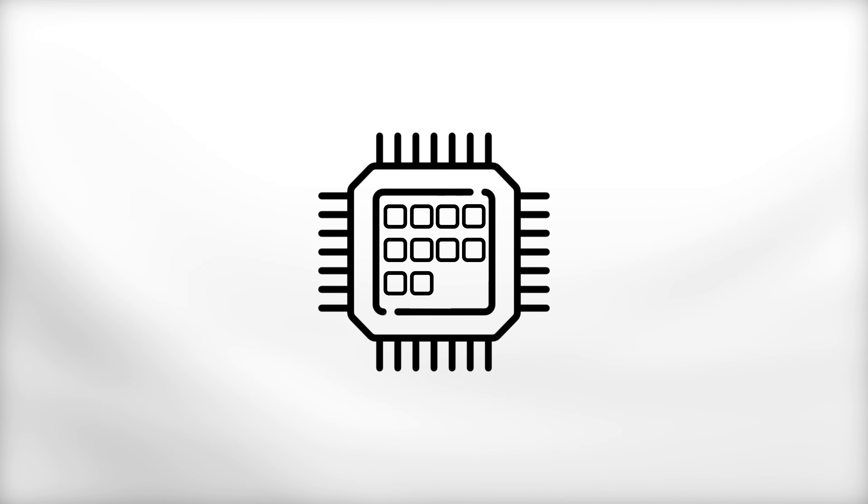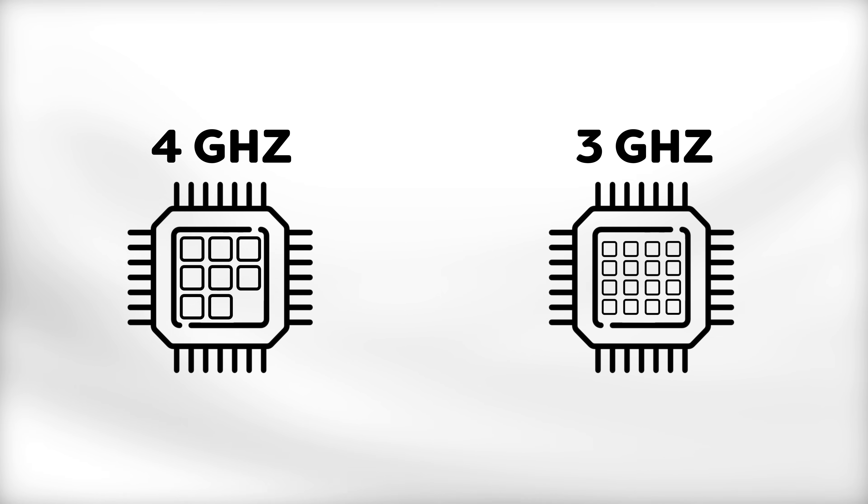Premiere Pro does work better with multiple cores since recent updates, but only to an extent — 8 to 10 cores is more than enough. A 4 GHz CPU with 8 cores will outperform a 3 GHz CPU with 16 cores. So try to look for a fast clock speed with between 4 to 10 cores, depending on your budget.